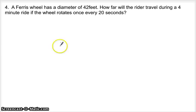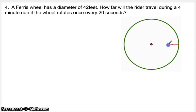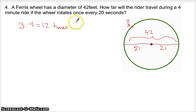Ferris wheel has a diameter of 42 feet. How far will the rider travel during a four-minute ride if the wheel rotates once every 20 seconds? Diameter of 42, it's almost easier to think in radius and draw in radii. Once every 20 seconds is three times per minute, and we have four minutes. I'm going to say it's 12 times around. So this is going to be 12 times the circumference.